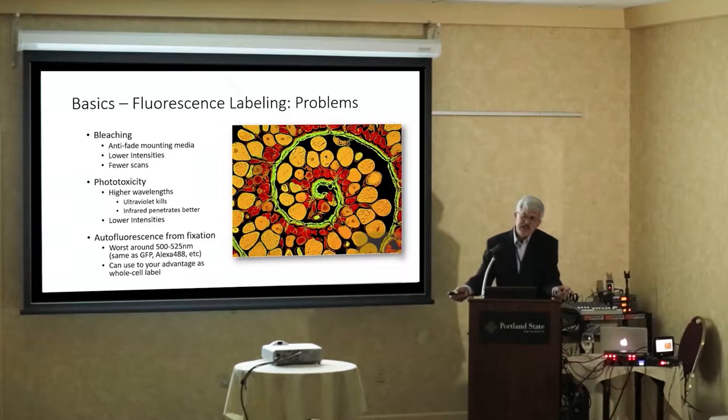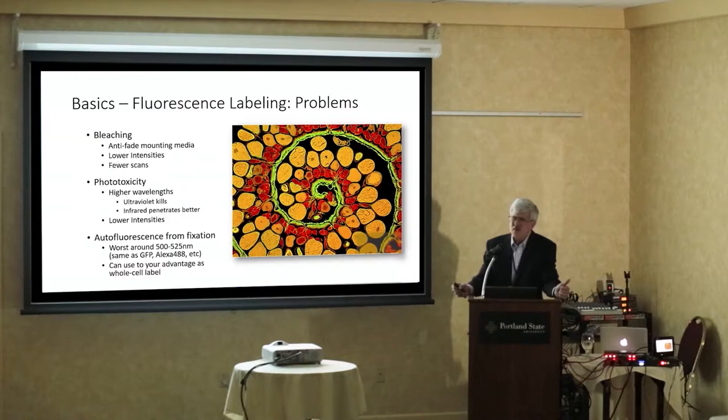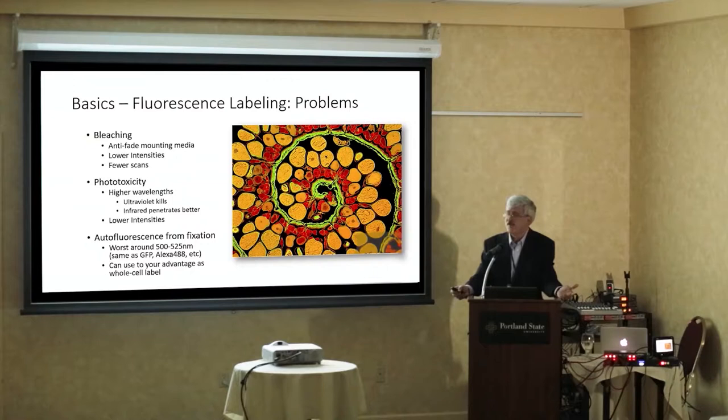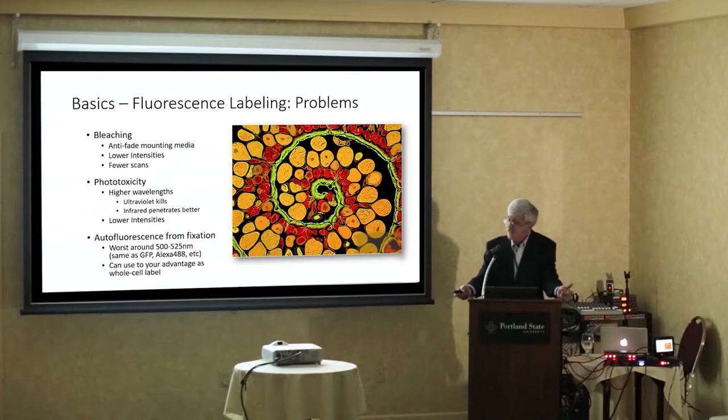When dealing with fluorescence, we have three basic problems: bleaching or fading, phototoxicity, and autofluorescence. With bleaching, if they're fixed cells you can use anti-fade mounting media, but really the only way to control it is to reduce the intensity of the light overall. The amount overall can also be controlled with fewer scans. With phototoxicity, lower wavelengths are not happy for cells — they don't like ultraviolet light, it kills them. So if you can use infrared or farther red, that's going to be happier for the cells. Infrared also penetrates more.